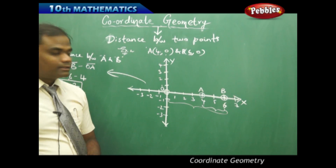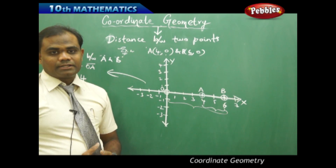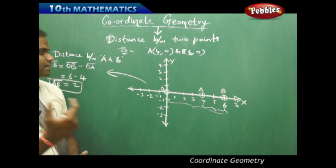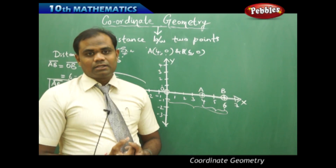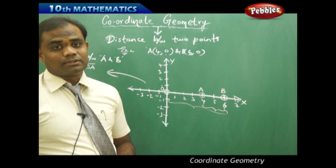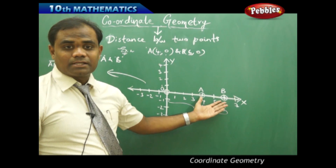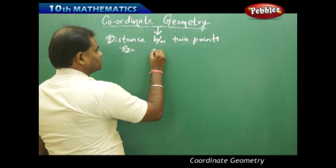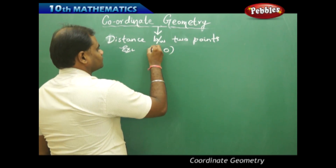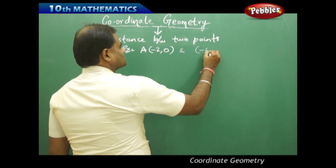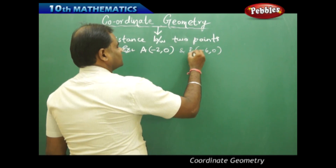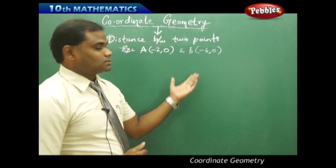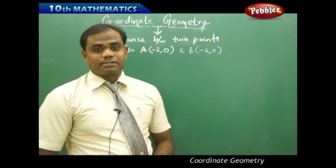This is how I get the distance between two points in this concept. Now let's take one more example. The distance between two points A = (minus 2, 0) and B = (minus 6, 0) — let's see what the distance between these two points is, now taken with negative values.